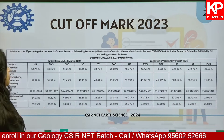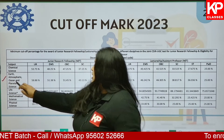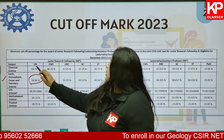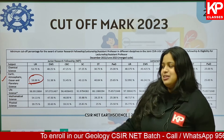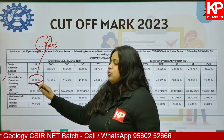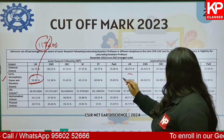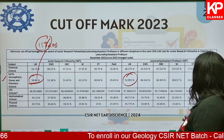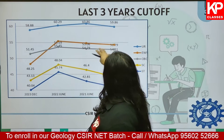Moving on to cutoff marks — this is the cutoff for 2023. For the Earth, Atmosphere, Ocean, and Planetary Science row, for the unreserved category, JRF fellowship is awarded to those with a score of 58.88%, which is almost 118 marks out of 200. For lectureship or assistant professor NET qualification, not much less than 52.99% is required.